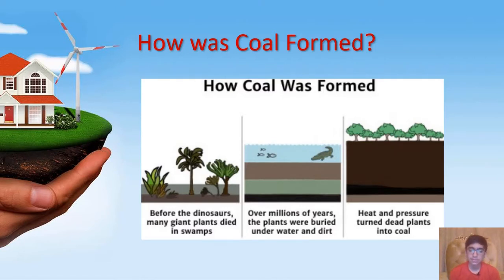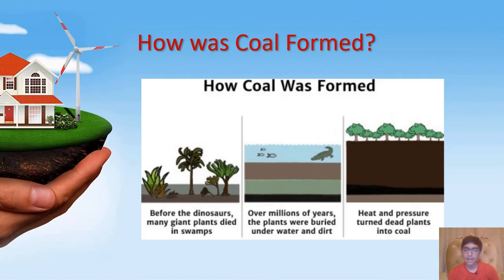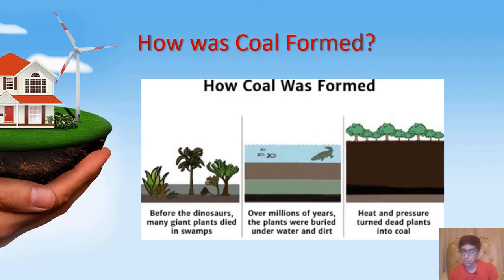So basically, how is coal formed? Before the dinosaurs existed, there lived giant plants in swamps which died over time, and the remains of those plants got buried under sand, silt, and rock. Those overlying rocks, salt, and silt produced a lot of pressure and heat on those remains, which created coal over a long period of time.